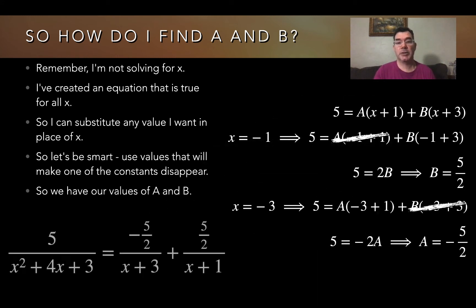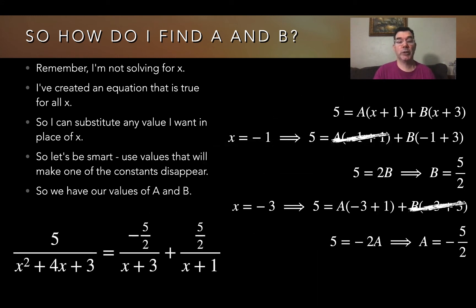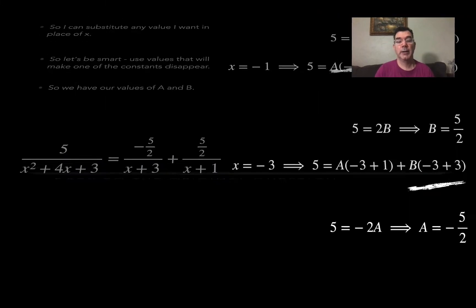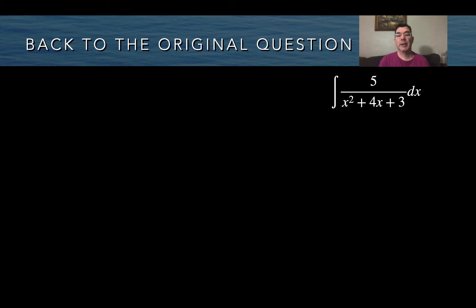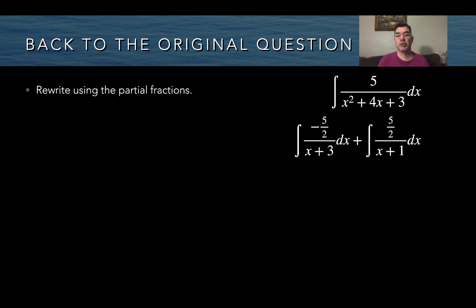Now I know what A and B are, so I can rewrite the original expression as something equivalent. Finding the antiderivative of one is the same as finding the antiderivative of the other, since those two expressions are equal. So I rewrite it using the partial fractions, and because they're being added, I can separate it into two separate integrals.